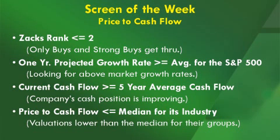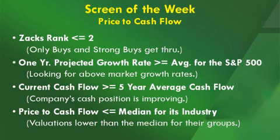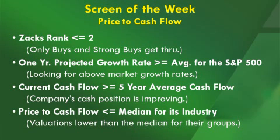The screen parameters are relatively simple, with price to cash flow as the main component. First, companies must have a Zacks Rank of less than or equal to 2, meaning only buys and strong buys get through. Next, the one-year projected growth rate must be greater than the S&P average — above market growth rates. Then, current cash flow must be greater than or equal to the five-year average cash flow, so we want to see the company's cash position improving. Finally, the price to cash flow must be less than or equal to the median for its industry — valuations lower than the median for their respective groups.